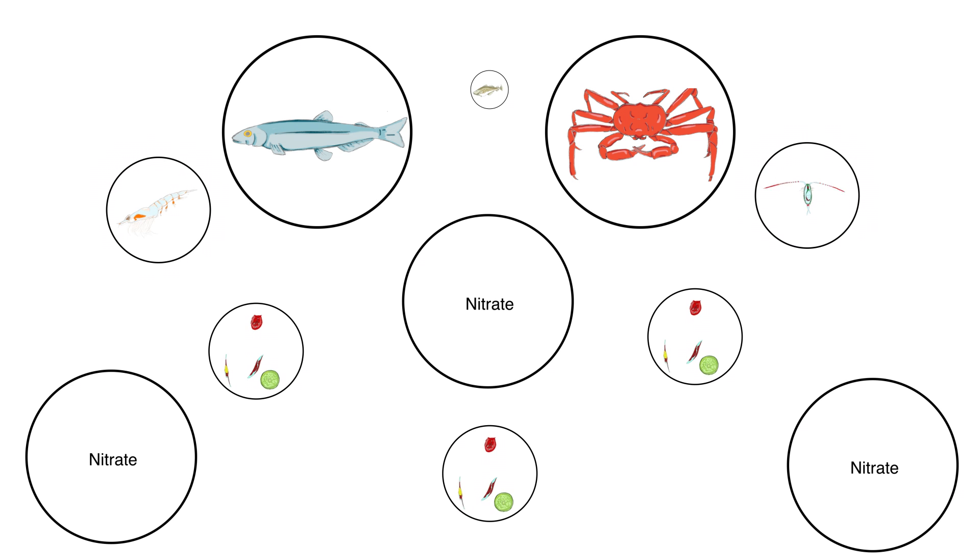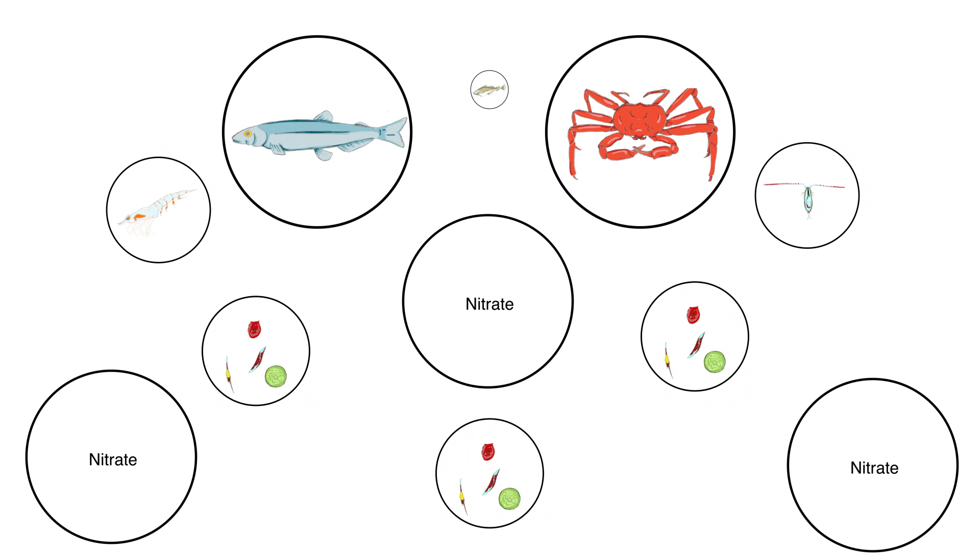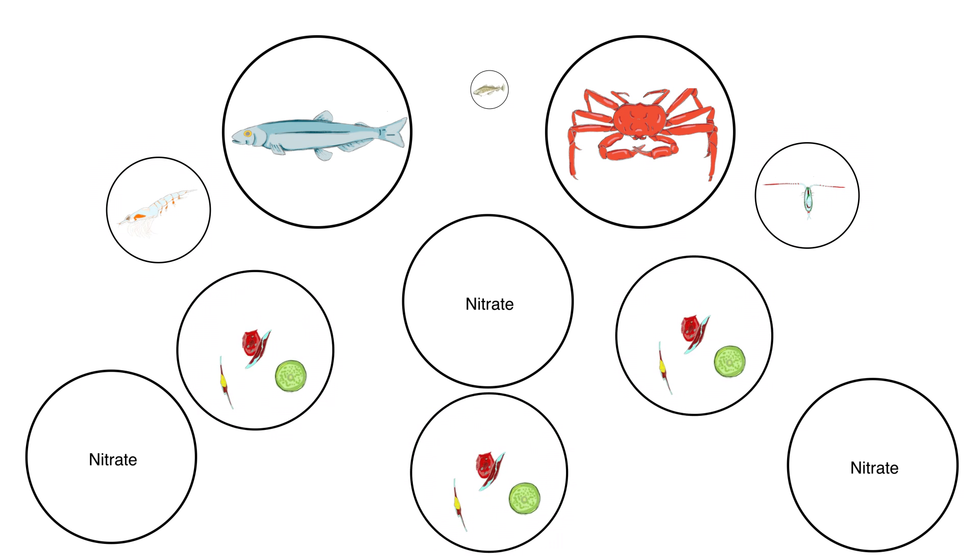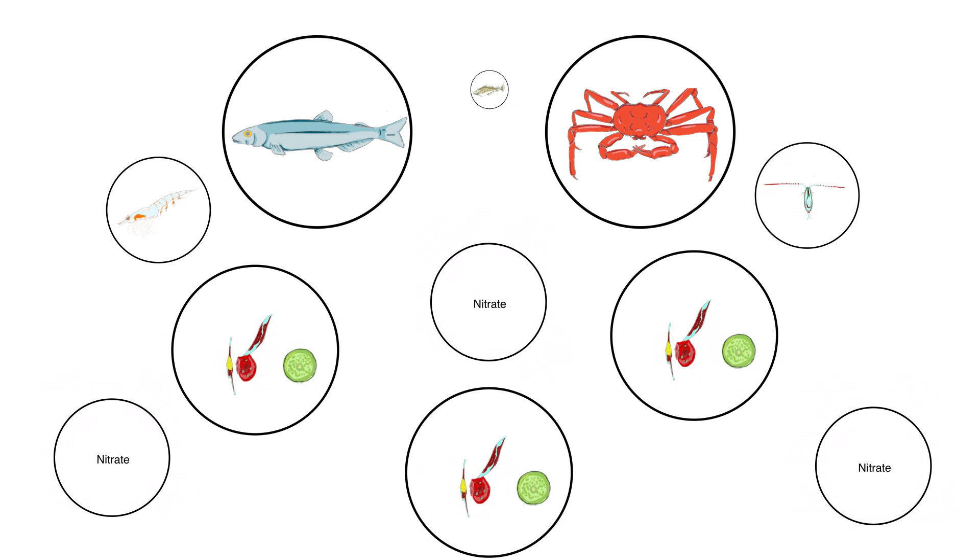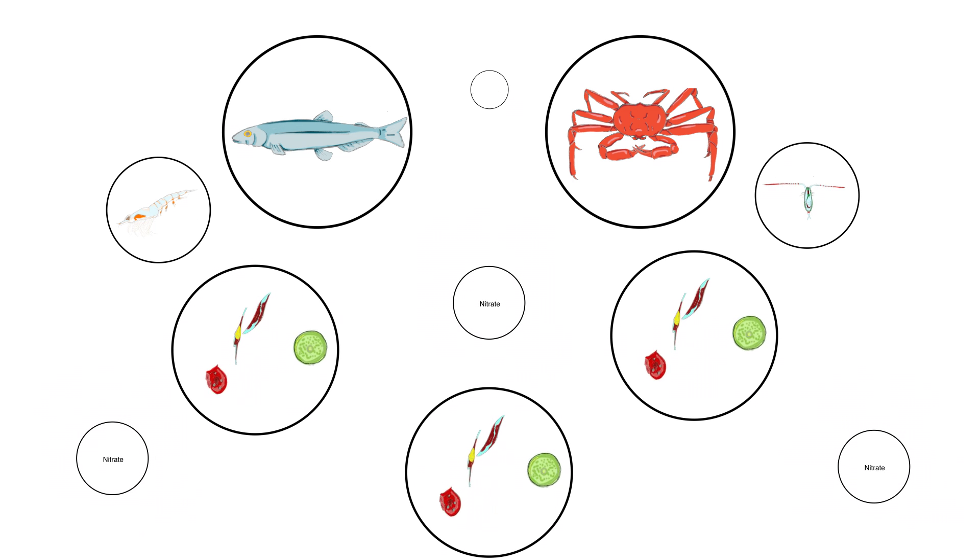The zooplankton population was decimated, and phytoplankton numbers were allowed to grow unchecked. This also resulted in the reduced availability of nitrate, a key limiting nutrient.